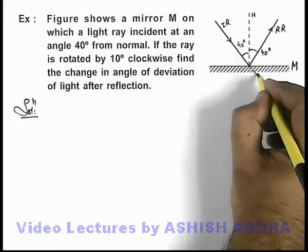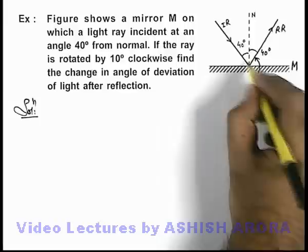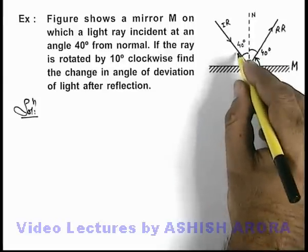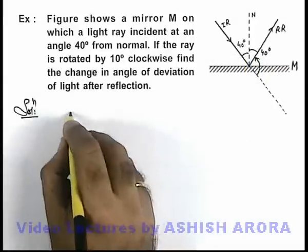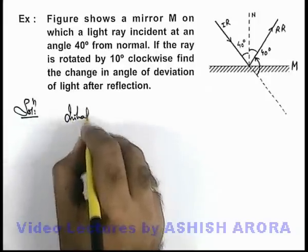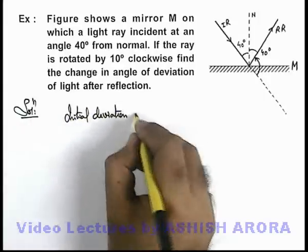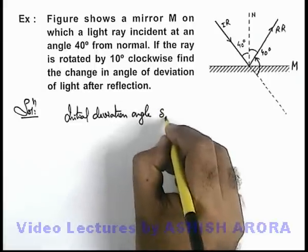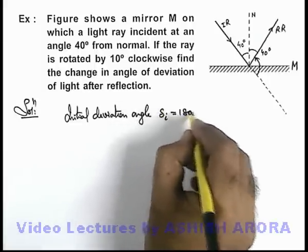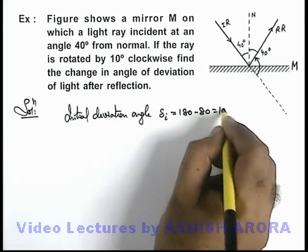If we find out the deviation of light from the initial direction that will be 180 minus 80. So we can write initial deviation angle of light ray will be delta i which can be written as 180 minus 80, that will be 100 degrees.